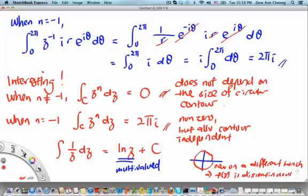And this means that f of z is discontinuous. So that's why 1 over z, the integral of 1 over z over the circular contour is nonzero. And actually, 2 pi i is the discontinuity between different branches of ln z.